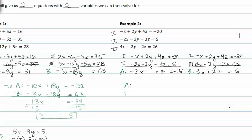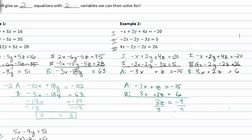Taking equations a and b and adding them together — negative three x plus z equals negative fifteen, and three x plus two z equals six — adding gives three z equals negative nine. Dividing by three, we get z is equal to negative three.